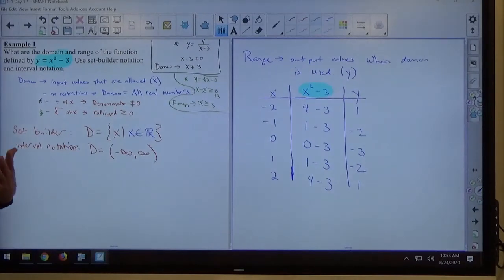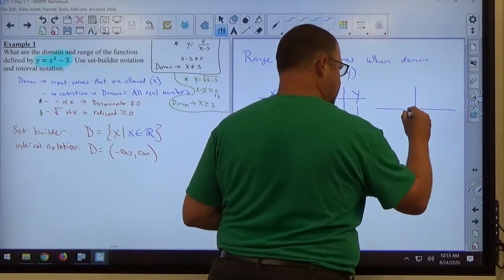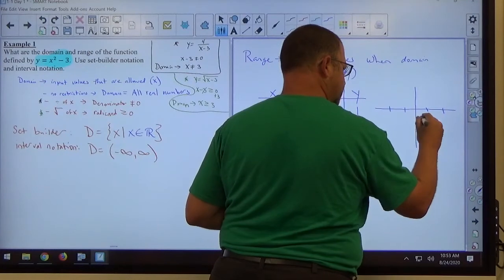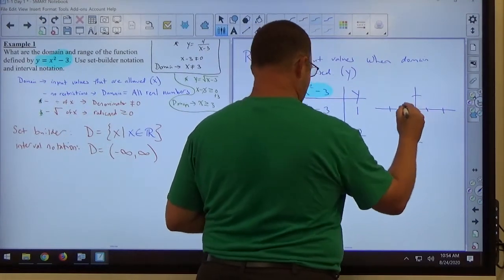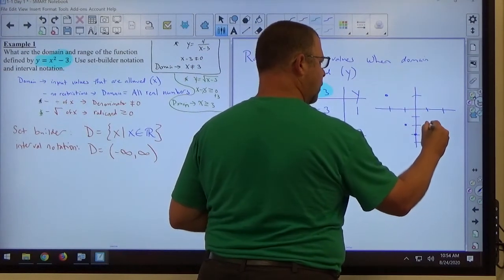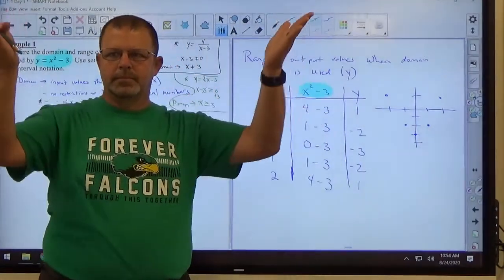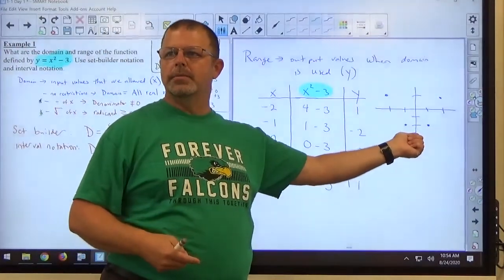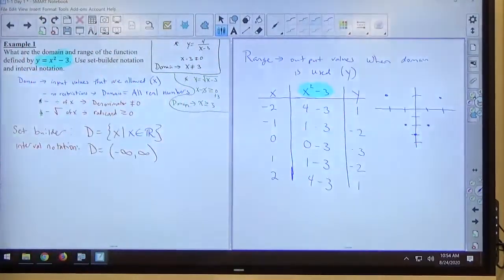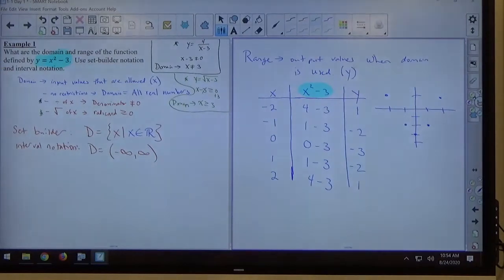If I'm considering these answers, I can do a rudimentary graph here just to kind of get a picture of it so I can see what it looks like. I've got negative 2 comma 1. I've got negative 1, negative 2. 0, negative 3. 1, negative 2. And 2, positive 1. It looks like it's going up. It looks like negative 3 is the bottom. Does it go below negative 3? No. Negative 3 is the bottom.